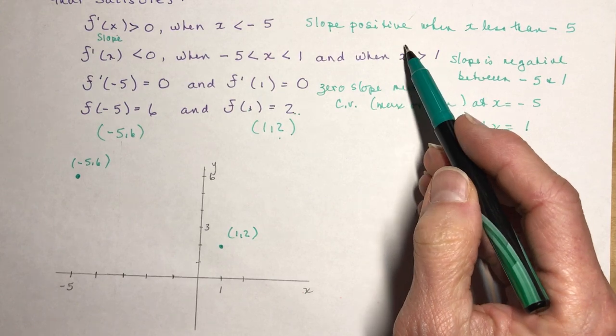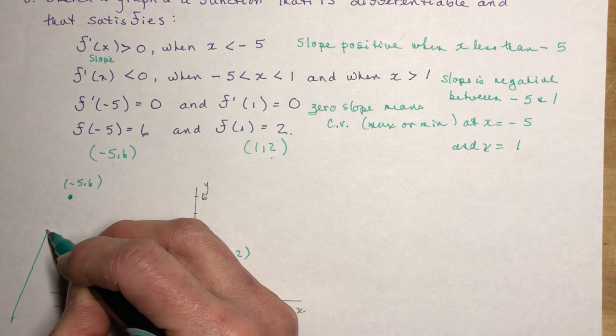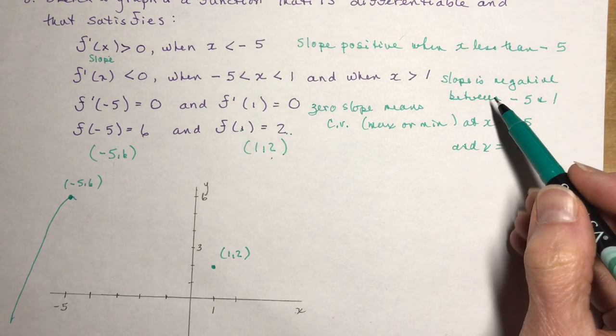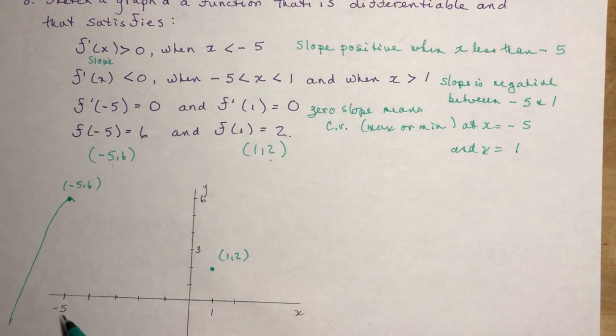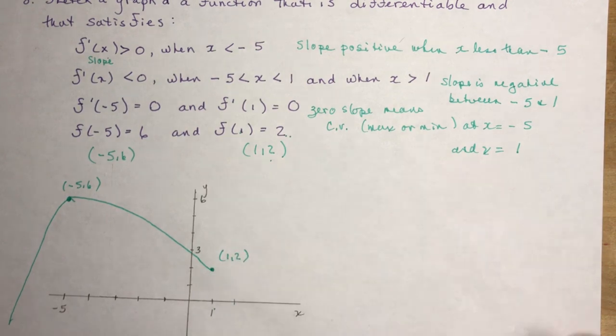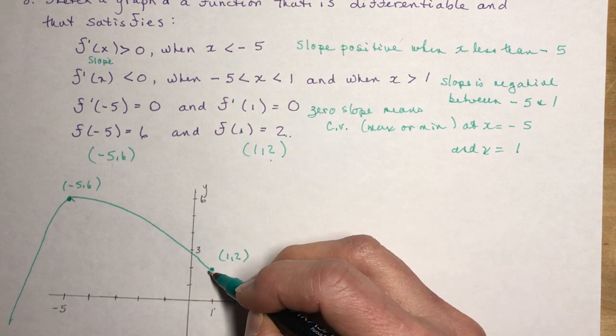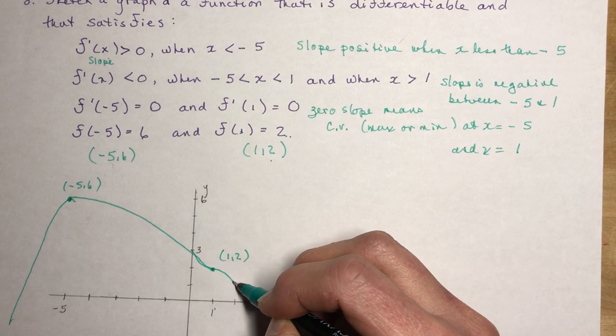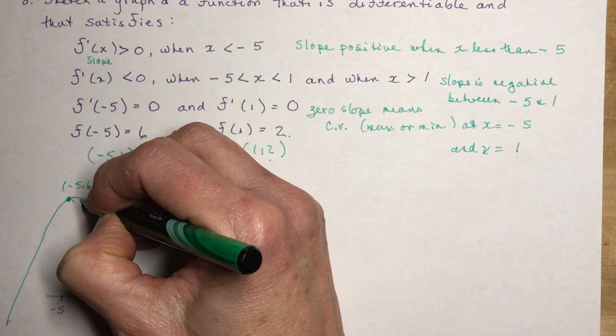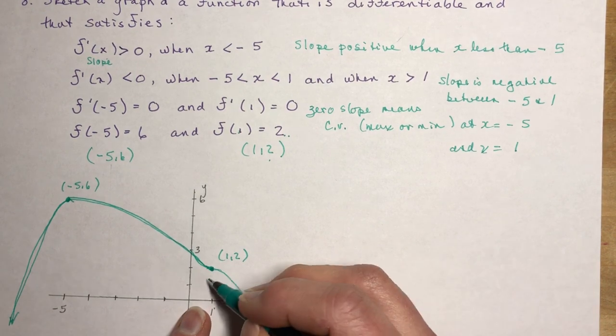And I know that there's zero slope here, so it's either a max or a minimum. It says it has positive slope when x < -5, so positive slope means it's increasing to this point, and then it has zero slope, and it has negative slope between here and here, so that means it's coming down to here, and then it's still going down when x > 1. This might be a point that you haven't seen too much of before, because it's kind of one of those wiggly ones.